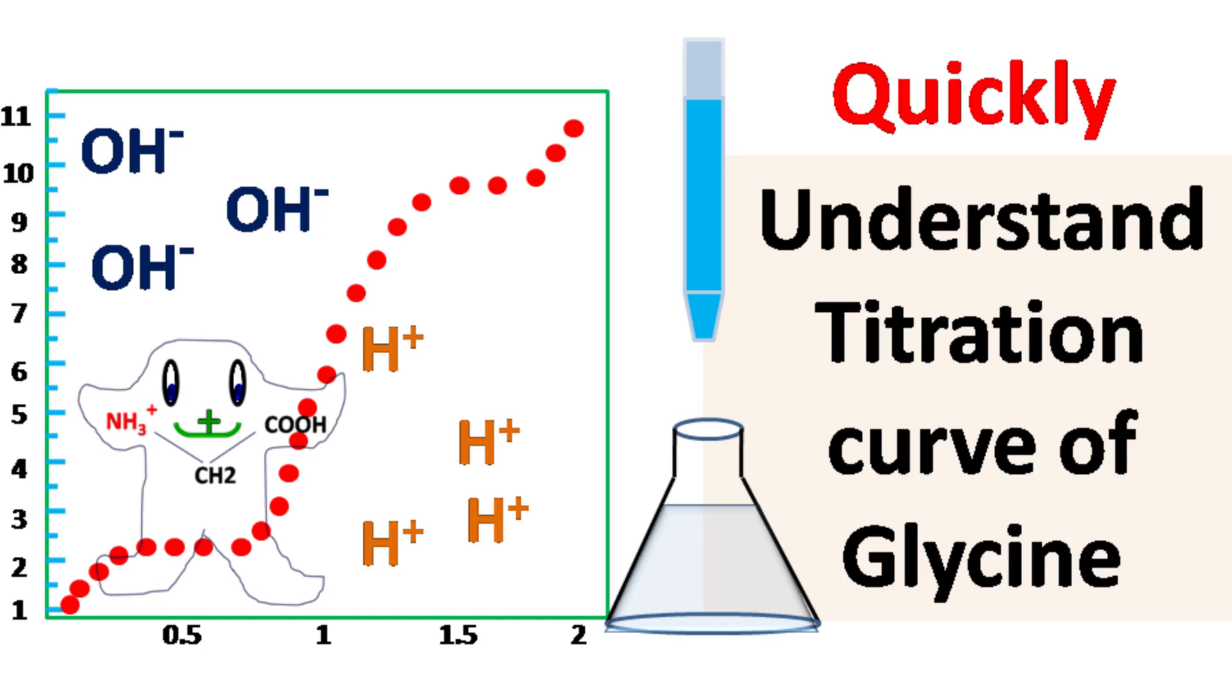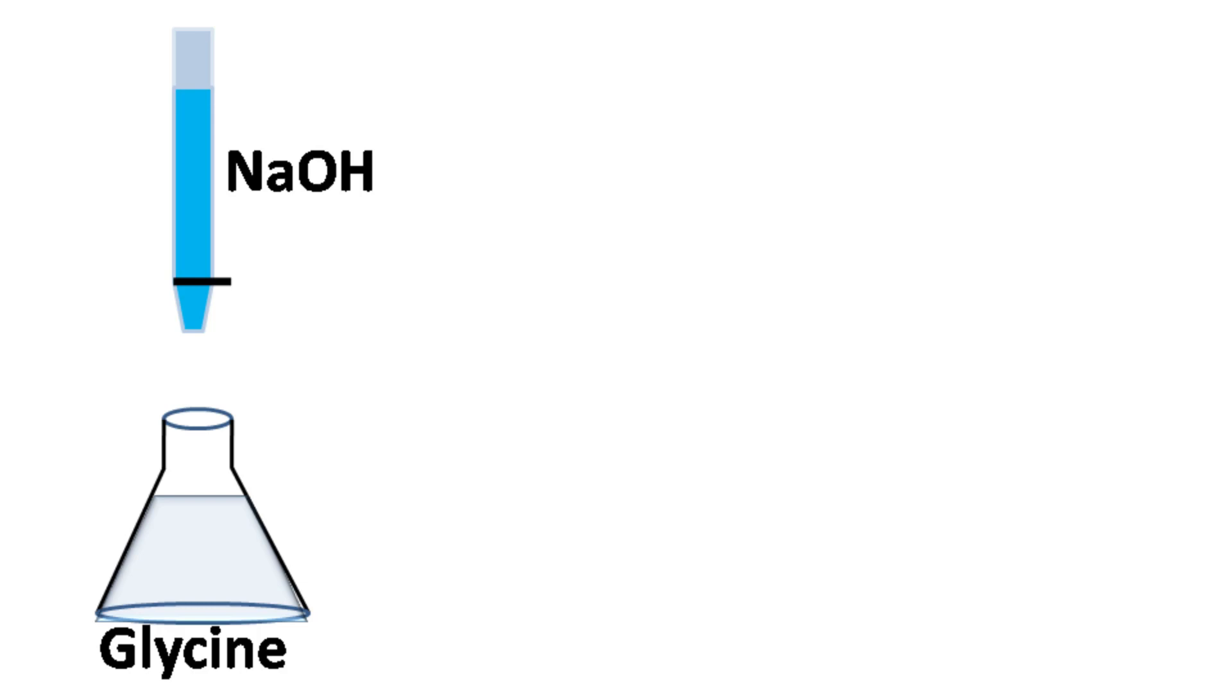Hello everyone, Quick Biochemistry Basics here. Let's talk about titration of glycine. Titration involves gradual addition of H plus or OH minus ions to a solution. In acidic environment, glycine has a net positive charge.